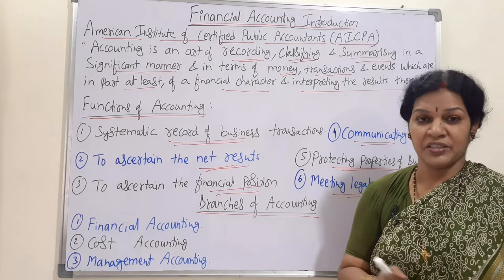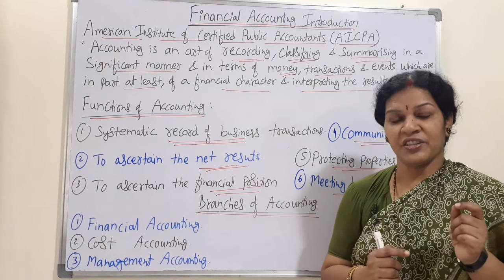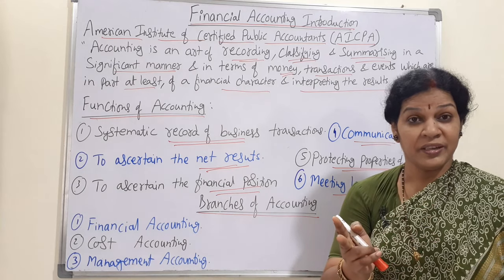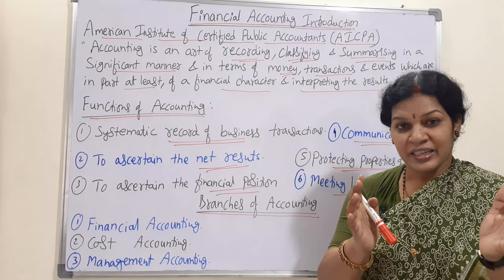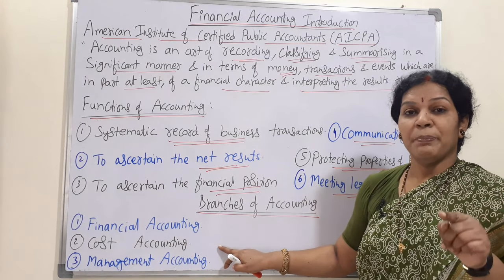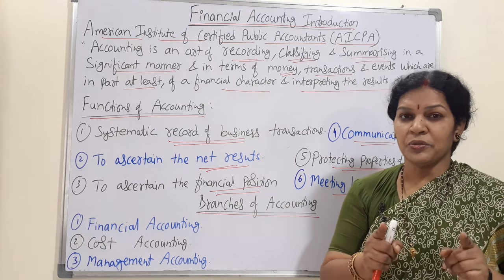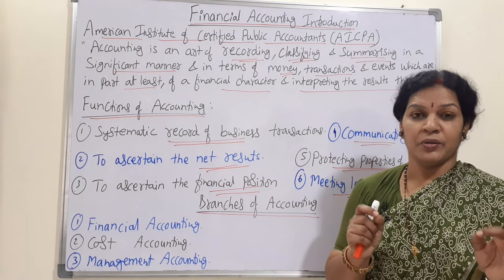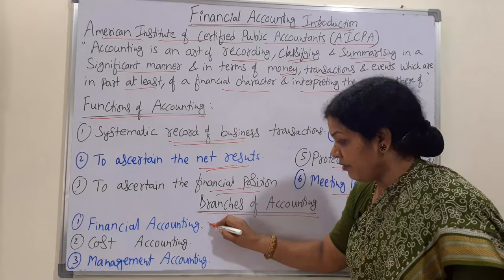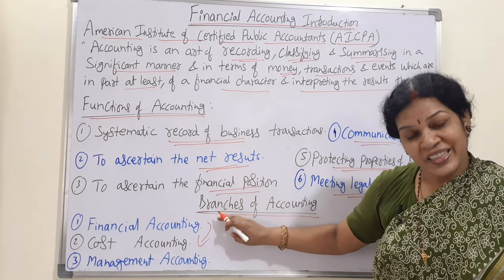Coming to cost accounting — it is a separate segment. In cost accounting, we prepare different types of accounts related to cost. We record cost-related transactions: how much the cost of assets is, how much we have spent, and how to control costs — cost controlling techniques. A person who prepares cost accounting is called a cost accountant, and they should have much better knowledge. Cost accounting is prepared with the base of financial accounting.